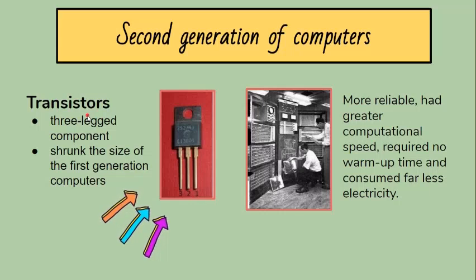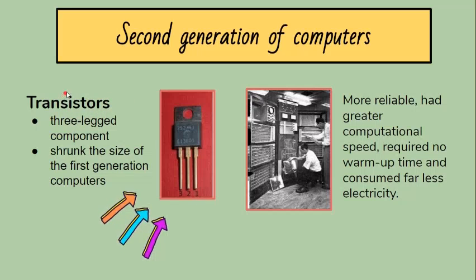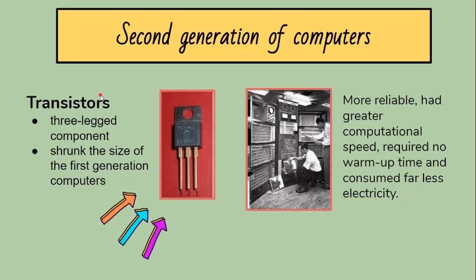Though it still relied on punched cards for input and printouts for output. Second generation computers moved from cryptic binary machine language to symbolic or assembly languages, which allowed programmers to specify instructions in words. High-level languages were also being developed at this time, such as early versions of COBOL and FORTRAN. The year 1959 marked the invention of transistors, which characterized the second generation of computers. Transistors are a three-legged component which shrunk the size of first generation computers, occupying only one one-hundredth of the space occupied by a vacuum tube.